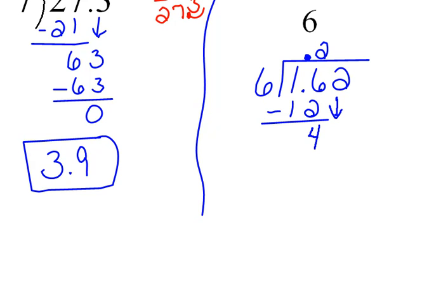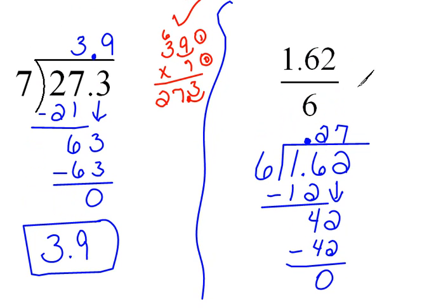Drop our next digit, which is a 2. 6 will go into 42, 7 times. 7 times 6 is 42, so it goes in evenly. There is no remainder. That tells us that our answer here is 0.27.